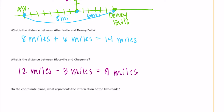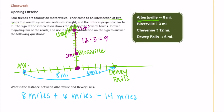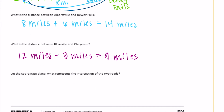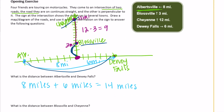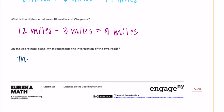Notice how in the last one we added the two distances — that's because they were on opposite sides of the origin, or opposite sides of zero. For Blossville and Cheyenne, we subtracted because they were on the same side of zero — both north of the origin. We subtracted to get rid of the overlapping part, whereas on opposite sides we add the whole thing together. This will come into play in future coordinate plane questions.